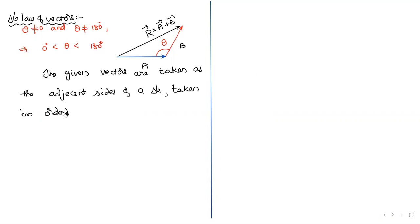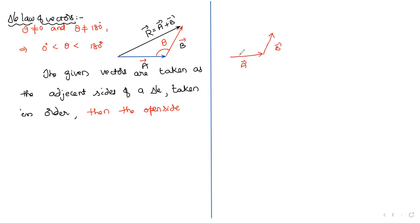Then the open side — the third side after constructing with A-bar and B-bar — is obviously open, because I took only two vectors. The open side gives the resultant vector, both in magnitude and direction.